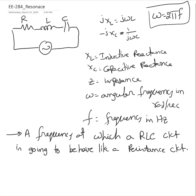Here you can see the RLC series circuit. JXL is the inductive reactance, which is j·omega·L. XC is the capacitive reactance, which is minus j·XC. Inductive reactance is always indicated as positive, capacitive reactance is always indicated as negative, and Z is the impedance. So Z equals R plus j·XL minus j·XC.